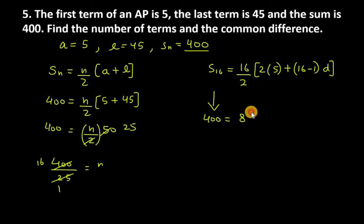16 over 2 is 8, 2 times 5 is 10, so we have 400 equals 8 times 10 plus 15d. Dividing both sides by 8, we get 50 equals 10 plus 15d.